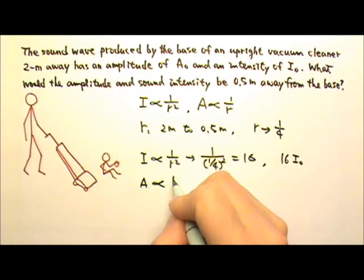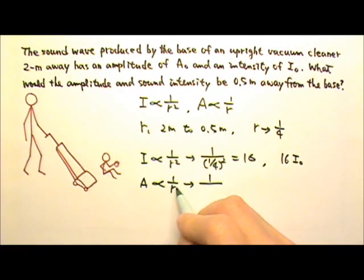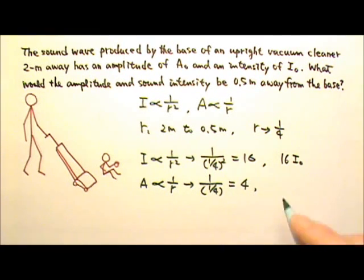The amplitude is proportional to 1 over r, which means it changes by a factor of 1 over one fourth. So it is 4. So the amplitude 0.5 meters away should be 4 times the A₀.